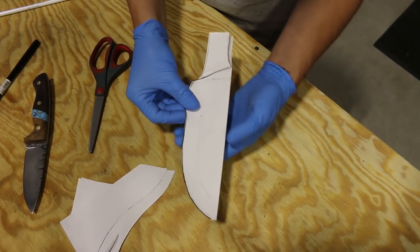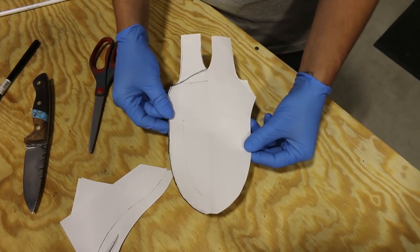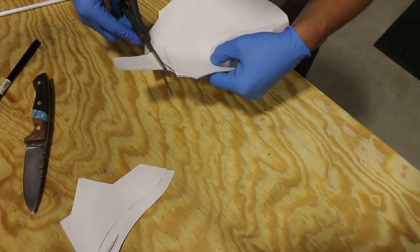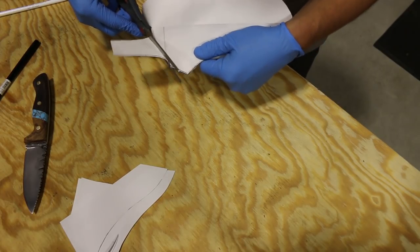As you can see, there's now a belt loop on either side. If it's a right-handed sheath, leave it on the right side and vice versa. I'll be cutting the loop from the left side to make this a right-handed sheath.